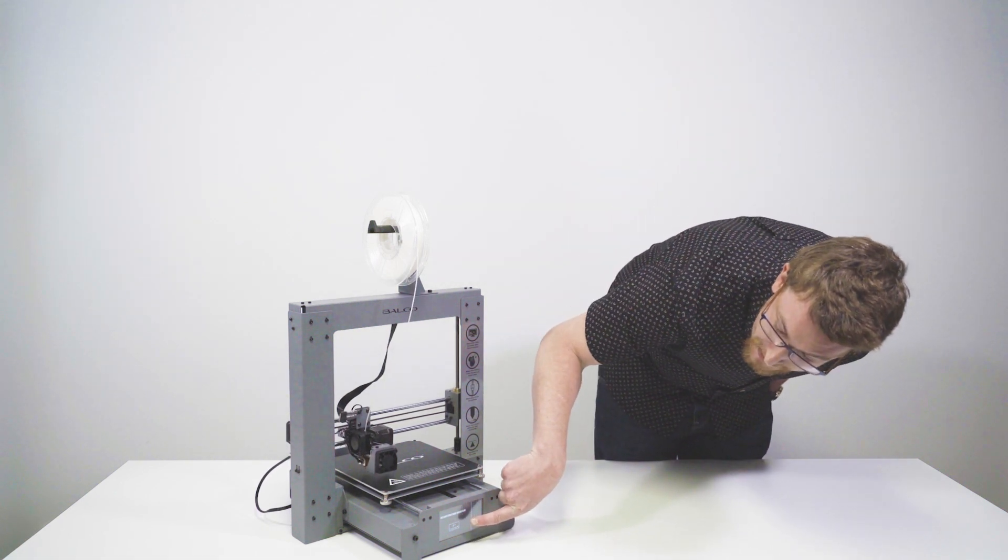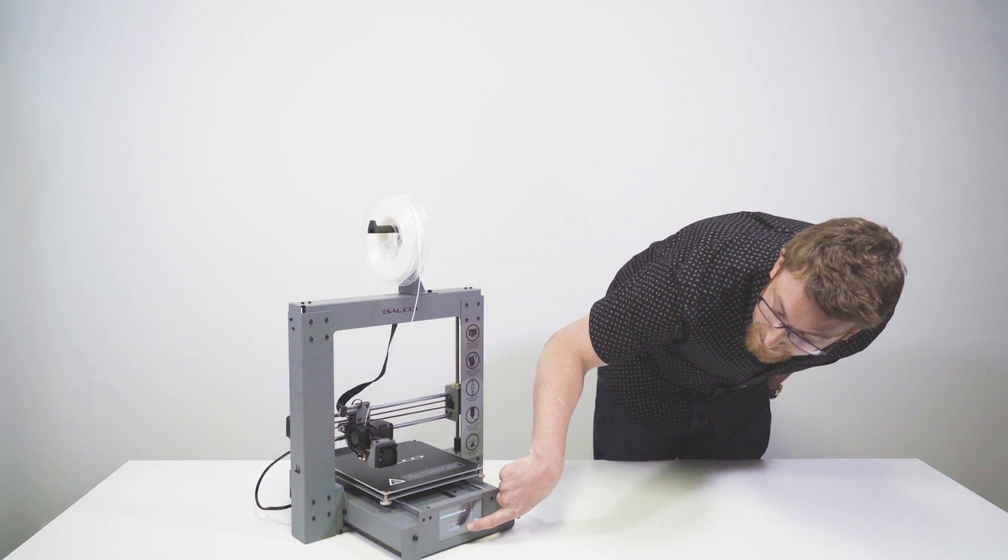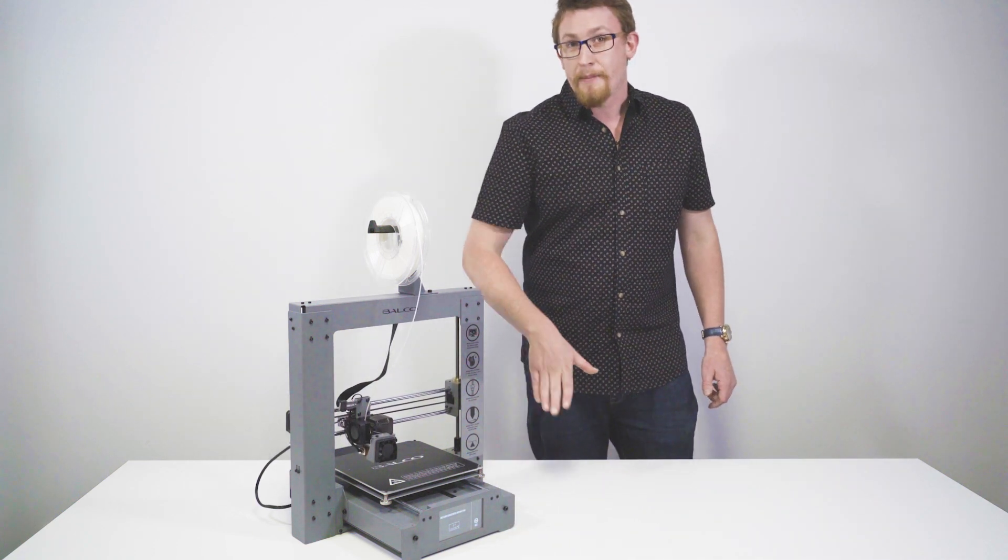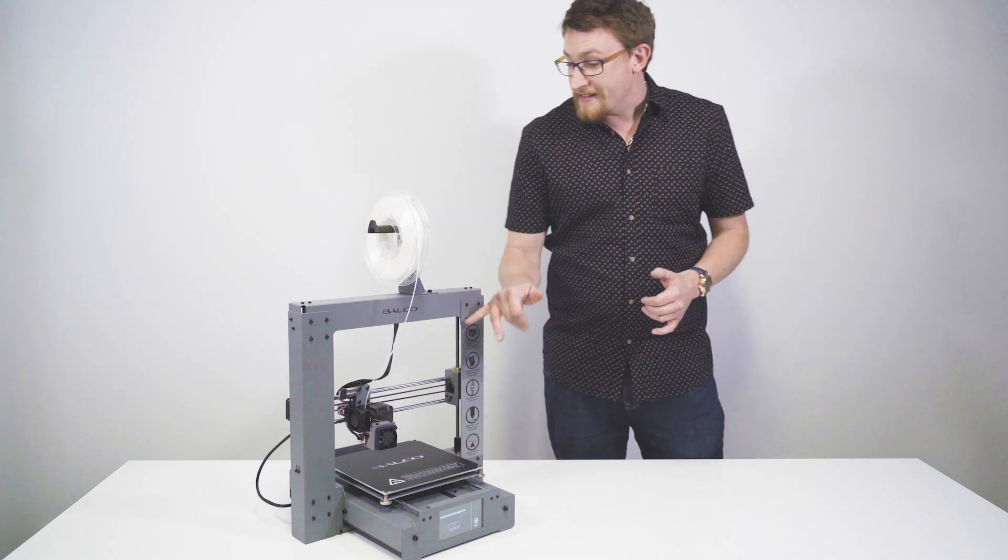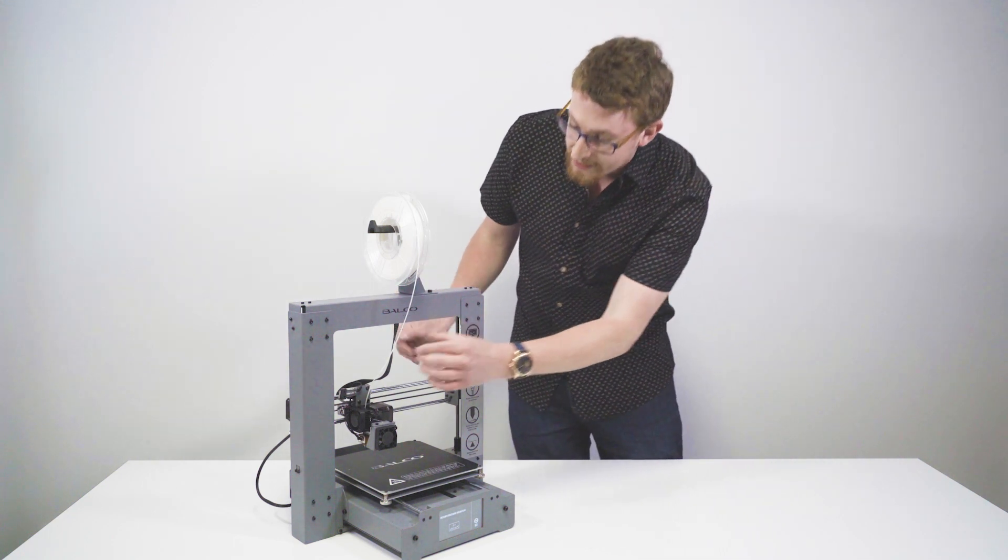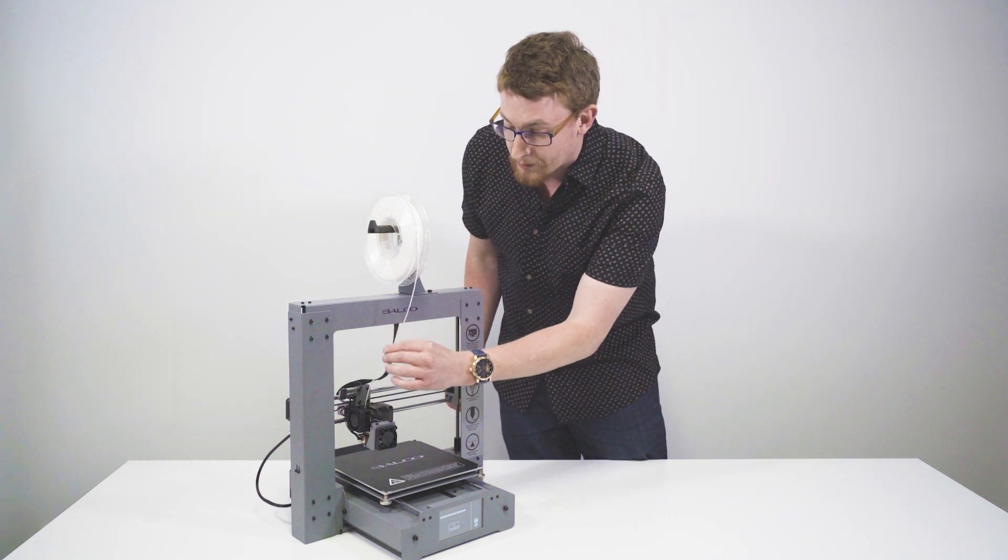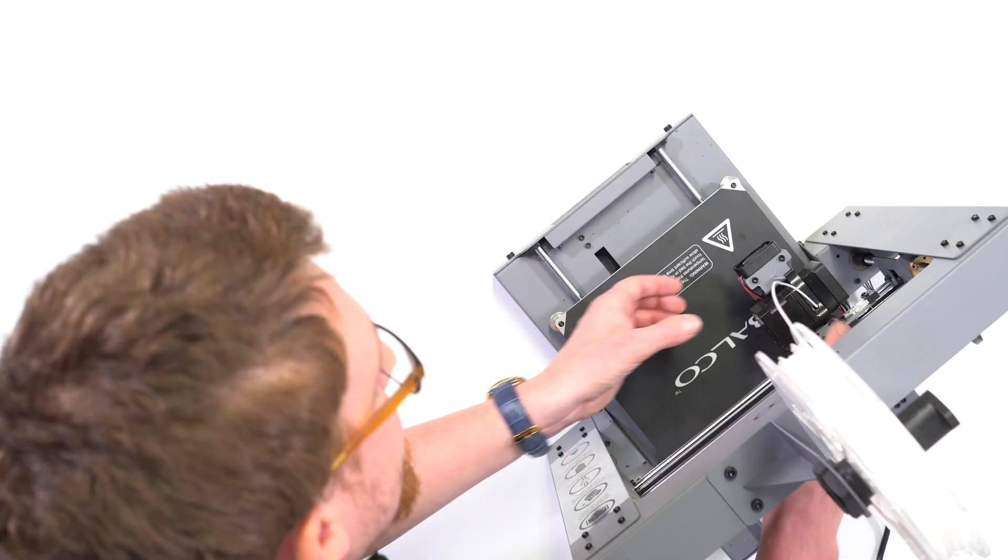What you'll see here now is the extruder temperature needs to get up to 190. So I'll let that happen. Once the extruder gets to the temperature it needs to get to, it's actually going to pull the filament down through here and into the nozzle.